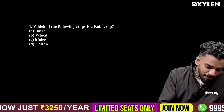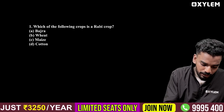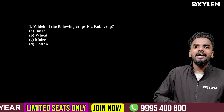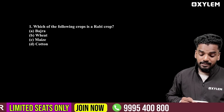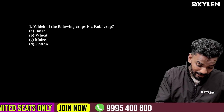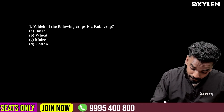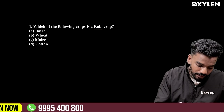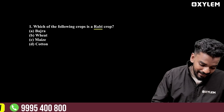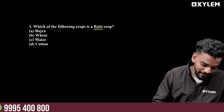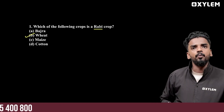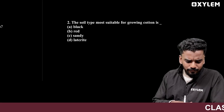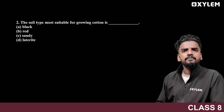So we have the question: which of the following is a type of Rabi crop? If we have a Rabi crop, the right answer is wheat. Wheat is the right answer. Shall we move to the next question?